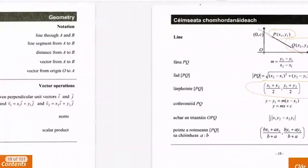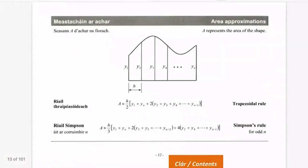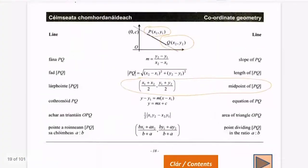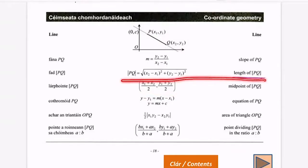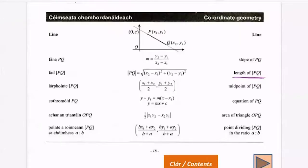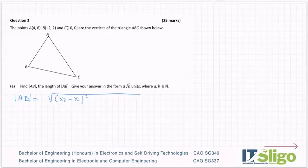When you're doing coordinate geometry, which is what this chapter is, you need the page in the log tables that gives you all of the formulas. Trig, geometry, coordinate geometry. So the length — and it could also be called distance — is this formula here. The length of PQ is the square root of (x2 minus x1) squared, plus (y2 minus y1) squared. Taken straight from the log tables — know that they're there. You'll get some marks for recognising that that's the formula you're using.